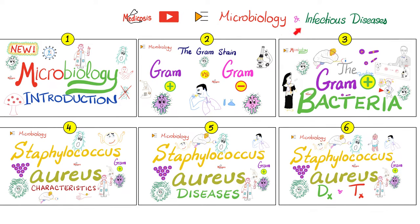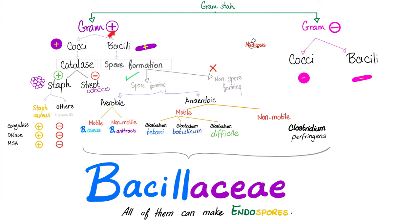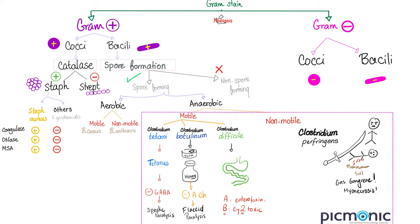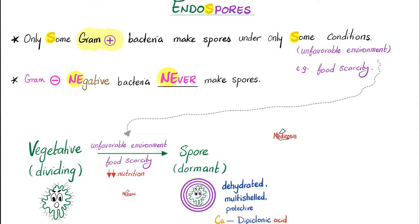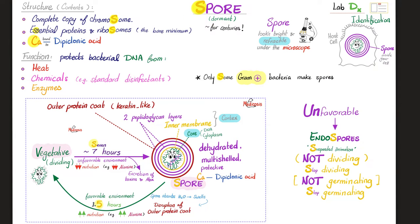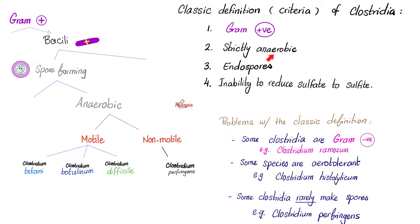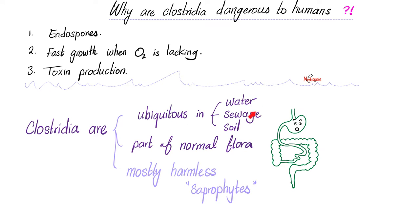Please watch the videos in this playlist in order. Clostridium perfringens, as you know, is a gram-positive rod — a rectangular rod — spore-forming, anaerobic, and immotile. Can Clostridium perfringens make spores? Yes, they can, although rarely. Structure-wise, spores have lots of calcium dipicolinic acid. Function-wise, they protect the bacteria from unfavorable environmental conditions. Clostridium are gram-positive anaerobes that make spores but cannot reduce sulfate to sulfite. Clostridium perfringens is everywhere — in water, sewage, and soil. They can colonize your body. They are saprophytes, can make spores, produce toxins, and can grow even when oxygen is lacking — hashtag anaerobic.